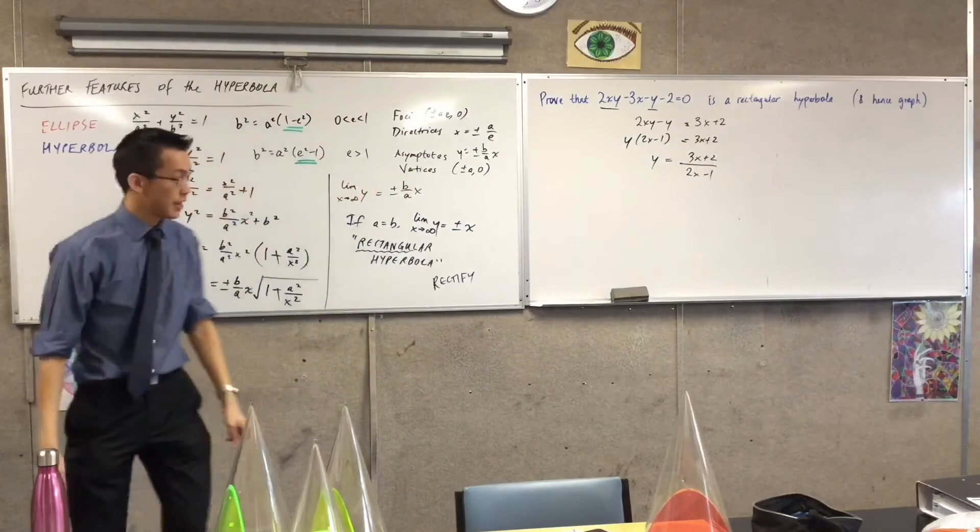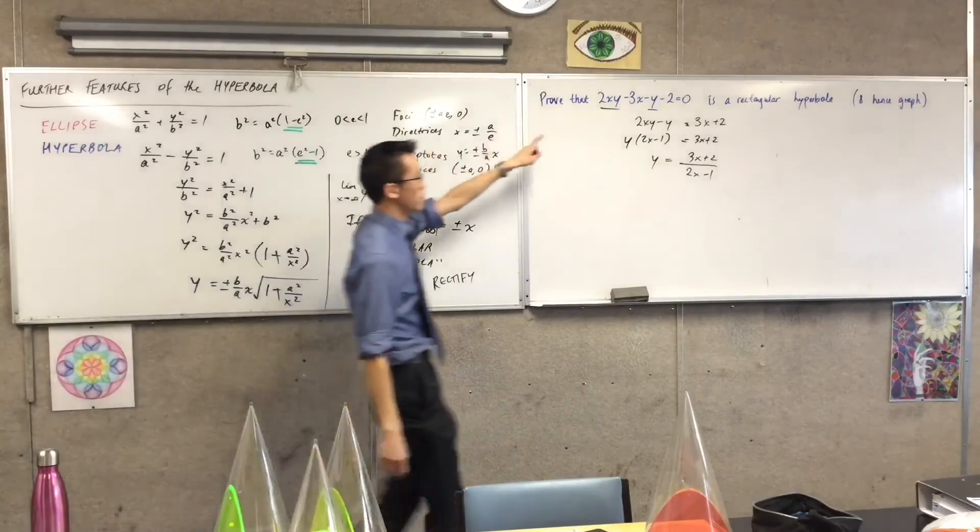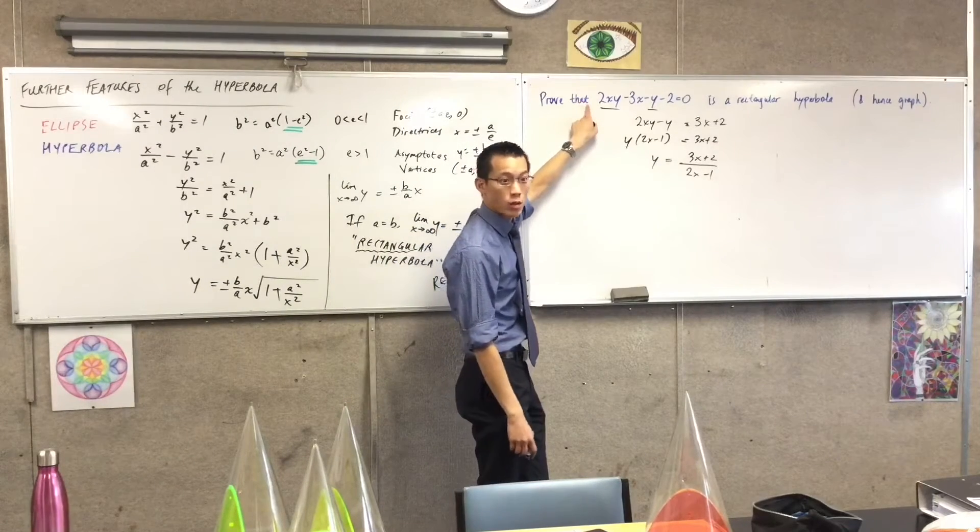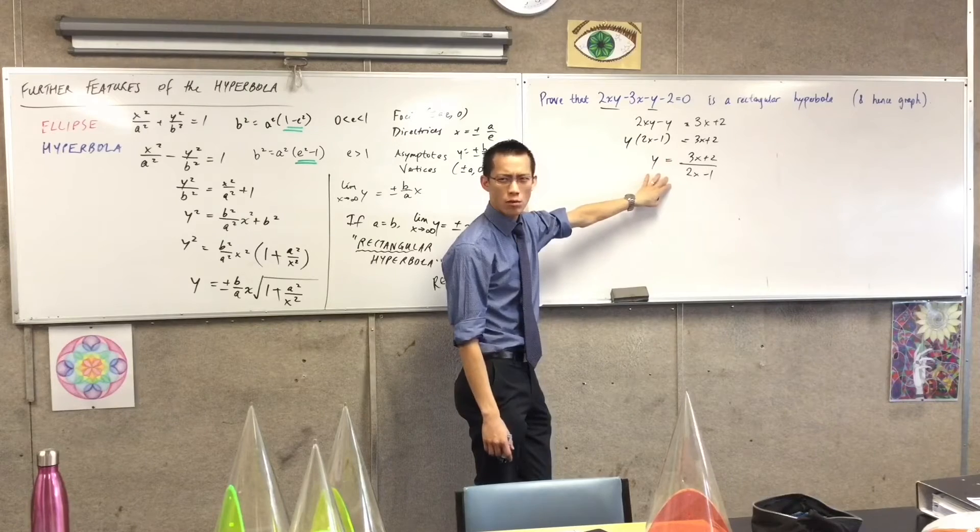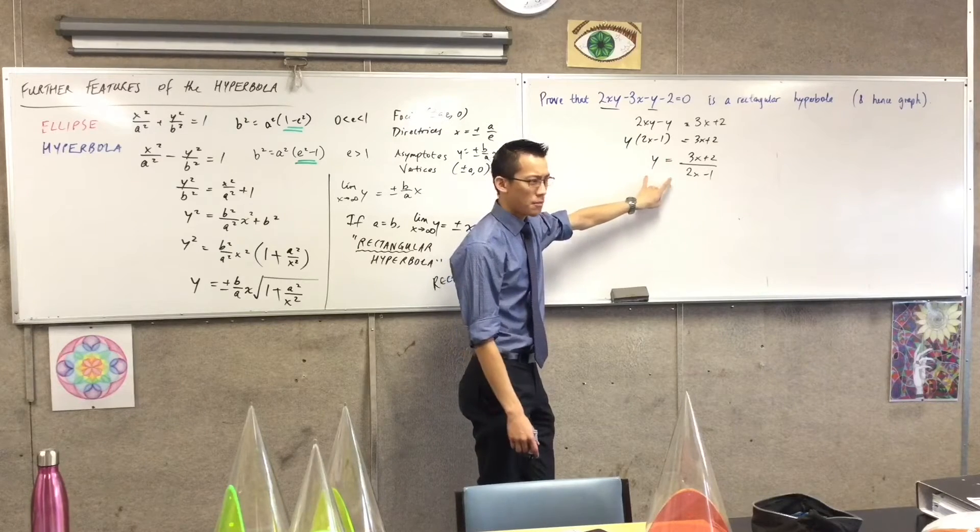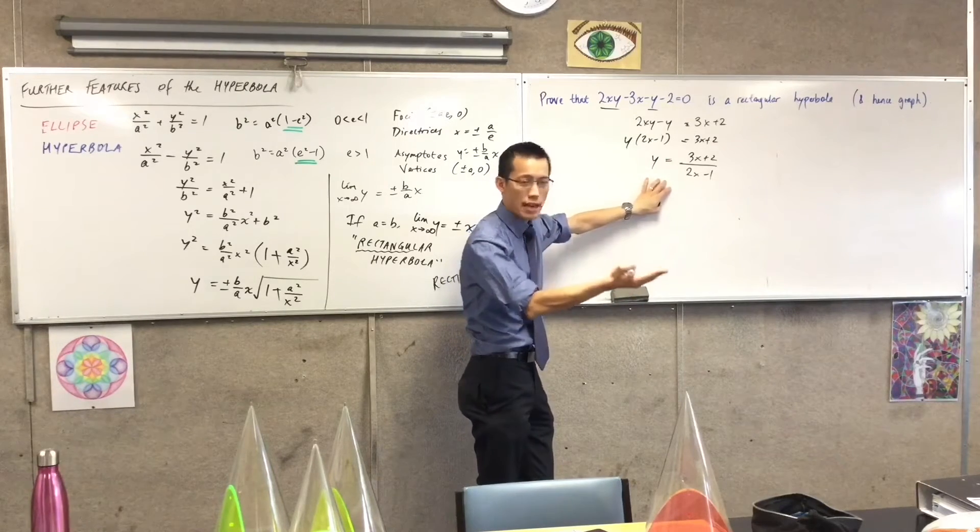Y is a function of X. This guy is not just a rectangular hyperbola, it's also a function. It's one to one. What was the point of making Y the subject? Why did I want to do that? How do I find the asymptote of this?